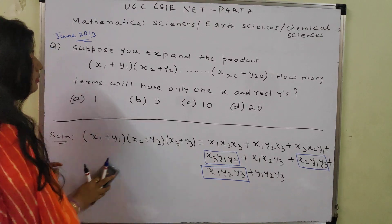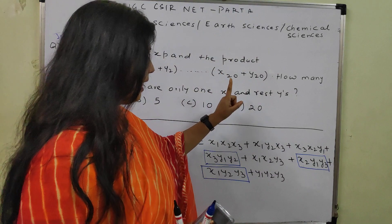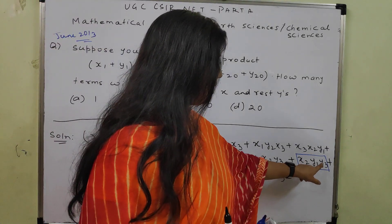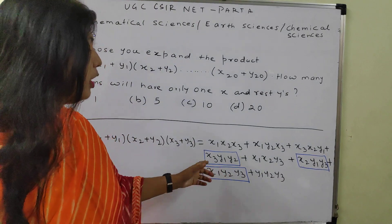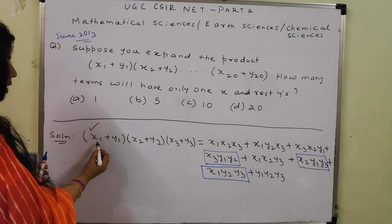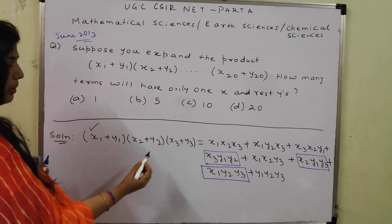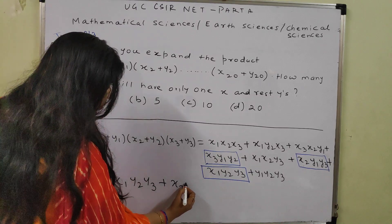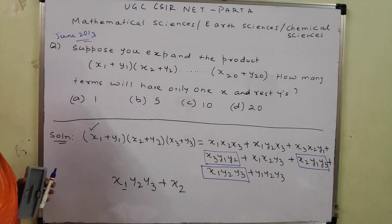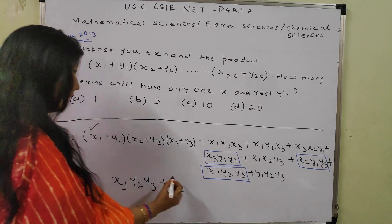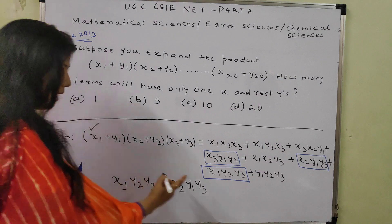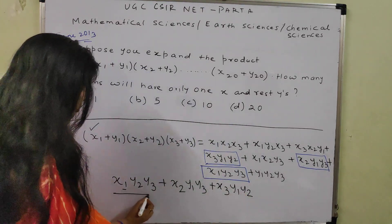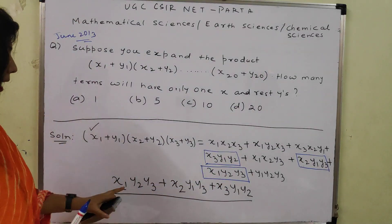The question asks how many terms will have only one x. Identifying those terms: if x1 is chosen, the rest are y2 and y3. If x2 is chosen, we get y1 and y3. If x3 is chosen, we get y1 and y2. These 3 terms each have only one x and the rest all y's.